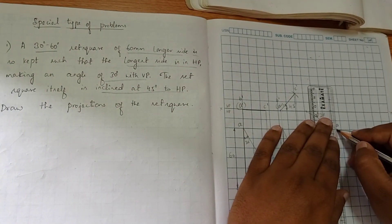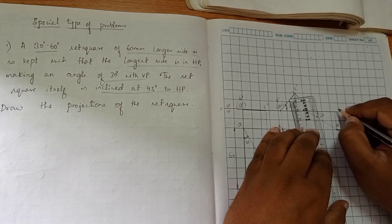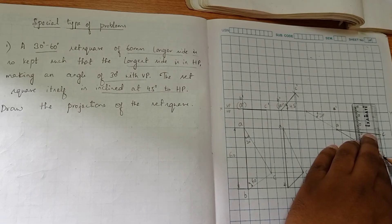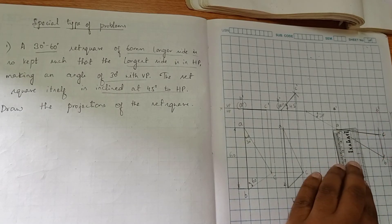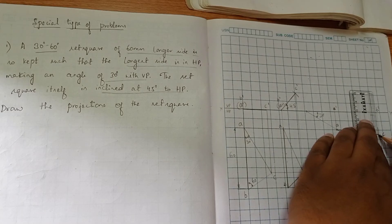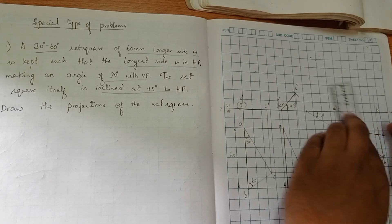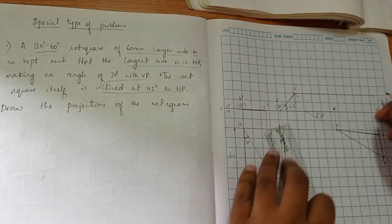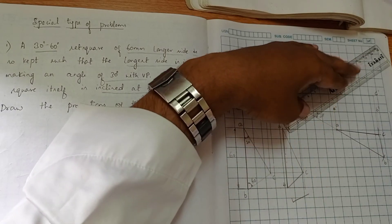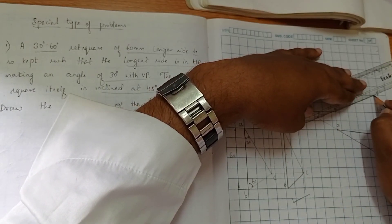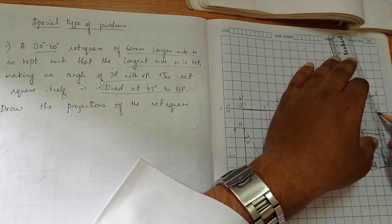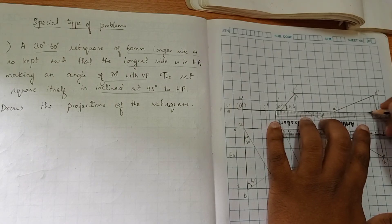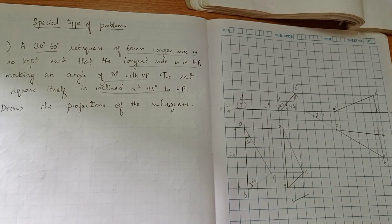So to complete the final position, here we get A dash. Similarly, we got B dash and C dash. We are getting C dash here, so we will join to complete the final position. That completes the problem.